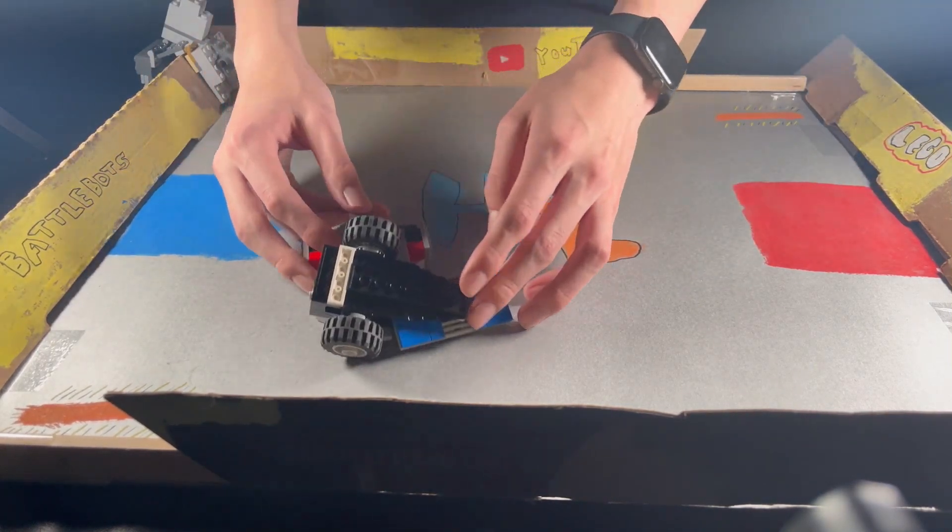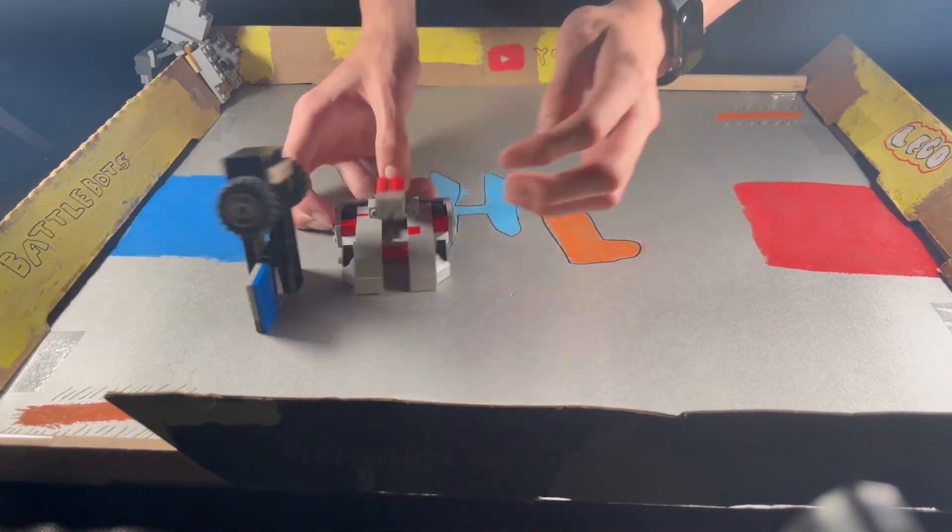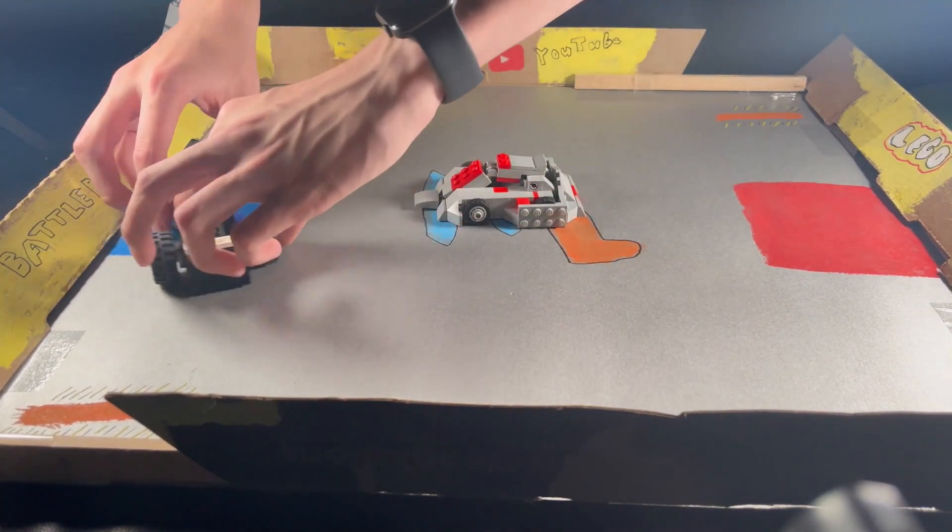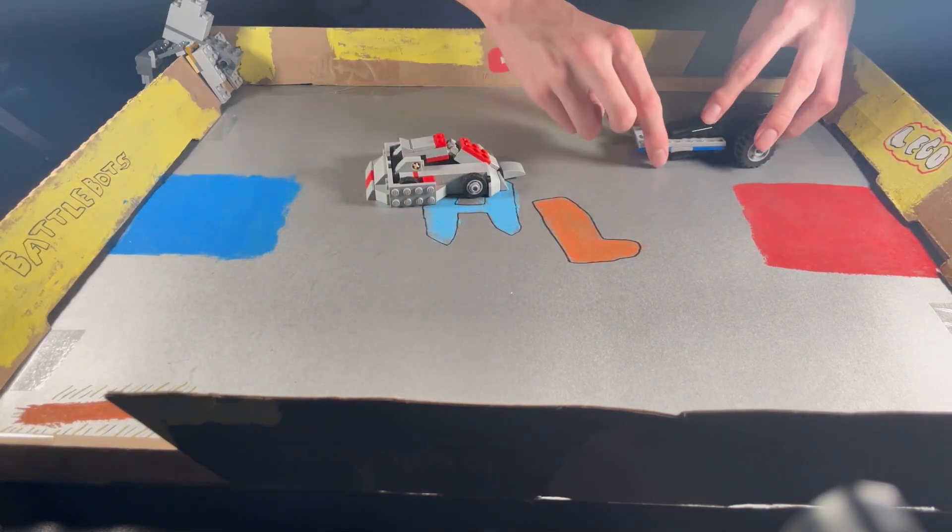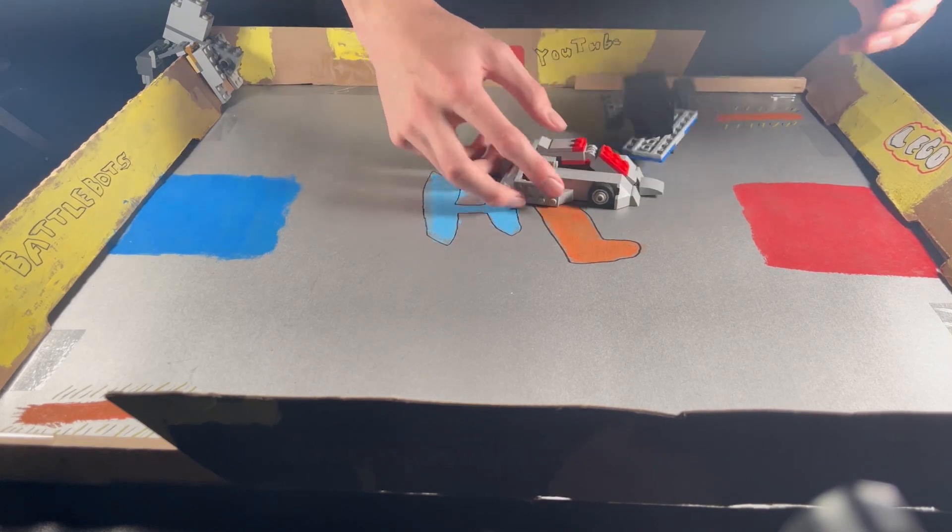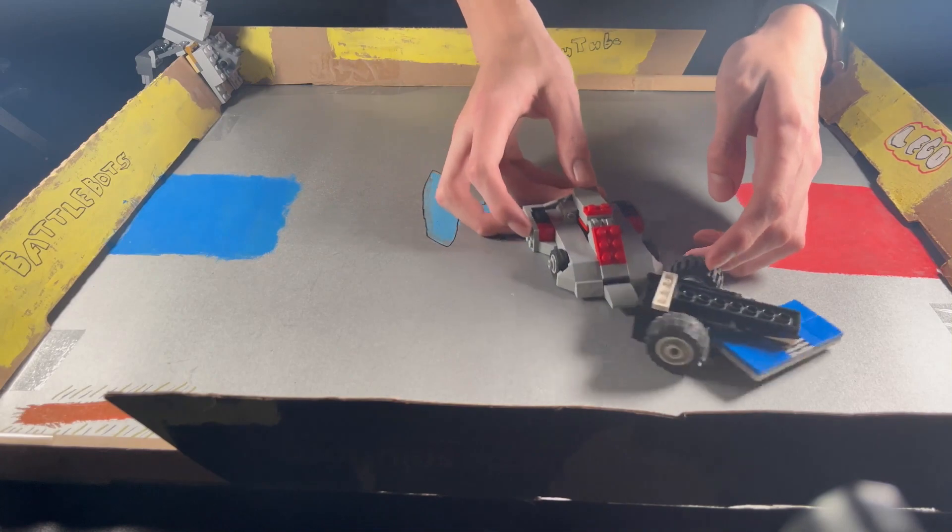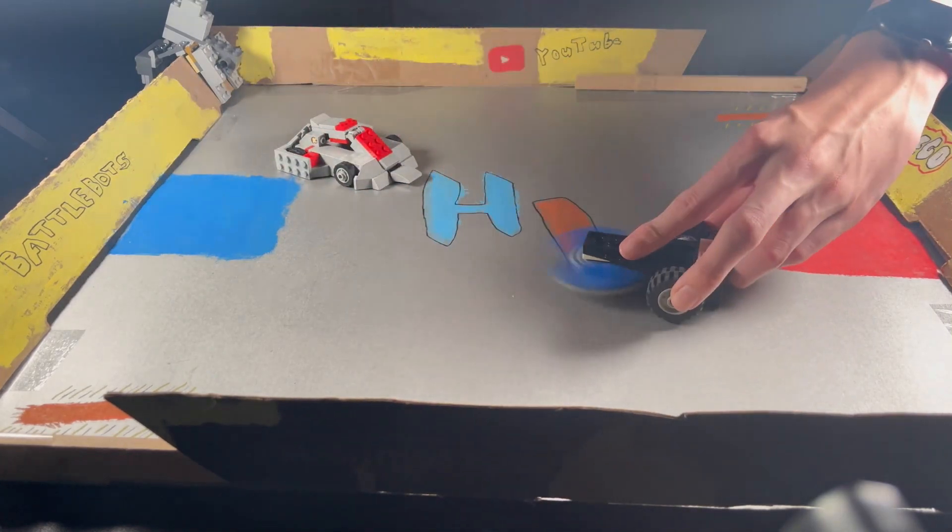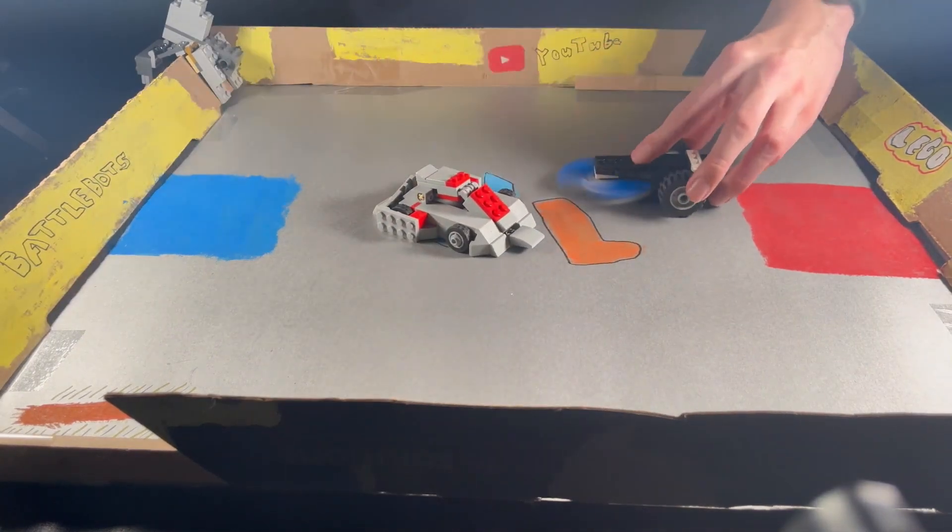Bronco getting right under Tombstone, stopping that spinner. Tombstone trying to get some damage but Bronco gets a nice flip. Bronco continuing to get under Tombstone, flips it over onto its back side. Gets under, flips it over again. Gets under, flips it over again. Tombstone trying to get some damage in but Bronco's just dominating so far in my opinion.